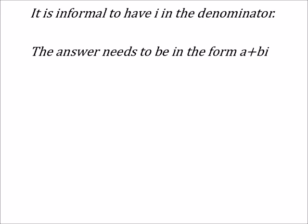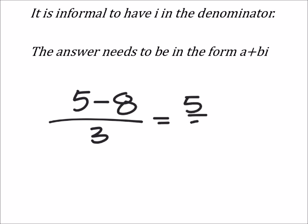If they share a denominator, two terms, then we can split it up. Maybe that didn't make sense. If I have something like, and we'll just go back to some 950 stuff, like 5 minus 8 over 3, I could split this up to be 5 thirds minus 8 thirds, right?